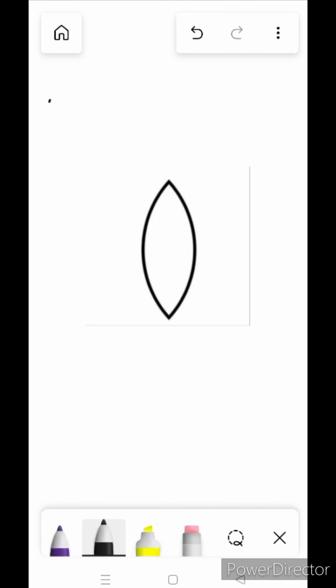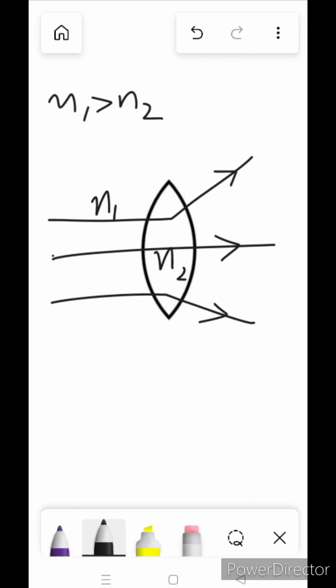The third situation is that n1 is greater than n2. n1 is outside and n2 is inside the lens, so now the outer medium is denser and the inner medium is rarer. When the ray moves to rarer medium, it will diverge away from the normal. These were three simple ray diagrams that we have understood for different media.